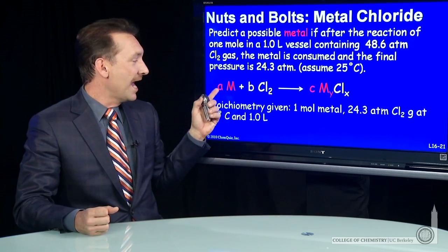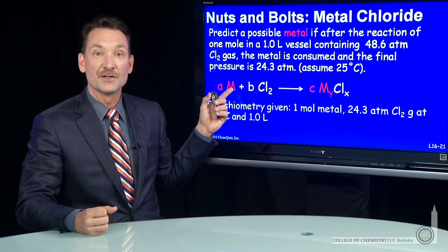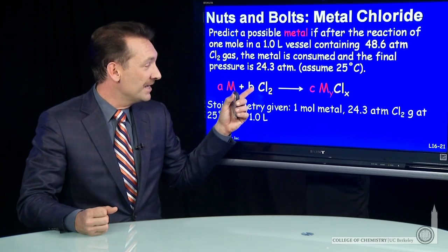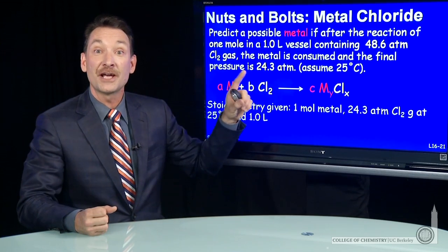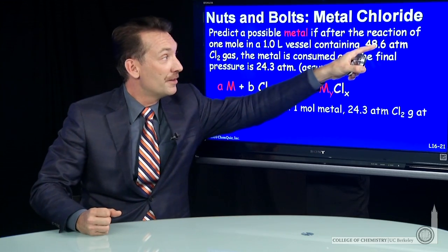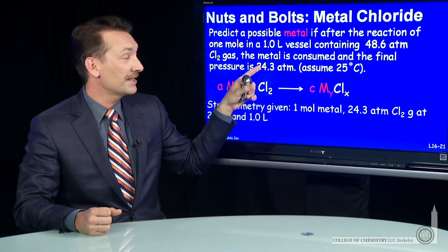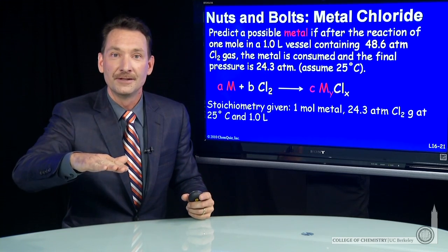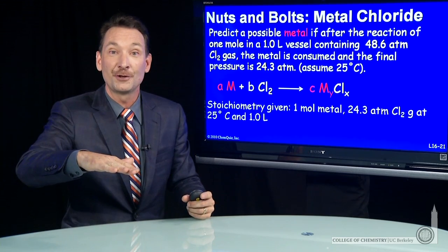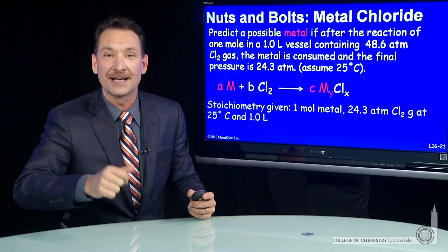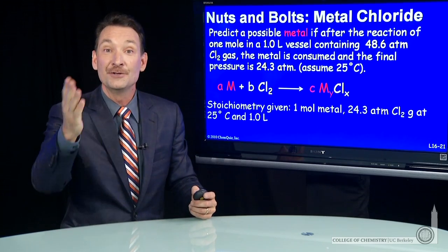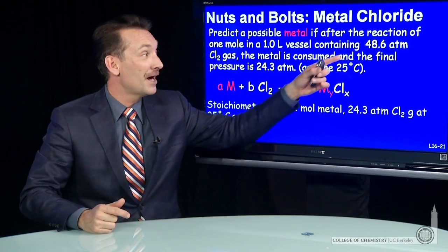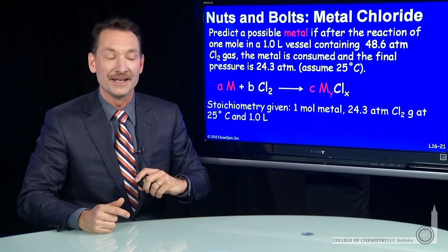We know A in this equation, the coefficient of the metal, is 1. B is the number of moles of chlorine gas, which I can figure out because I know the pressure went from 48.6 to 24.3. The pressure dropped by a factor of 2, meaning half of the original chlorine molecules were used up in that chemical reaction.